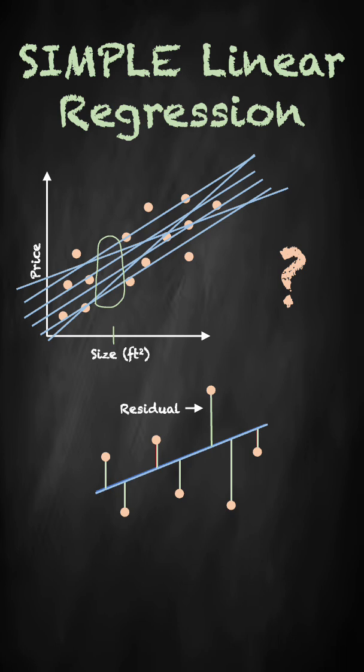I want to find the line where those distances are as small as possible because that will be the line that's closest to all points on average.